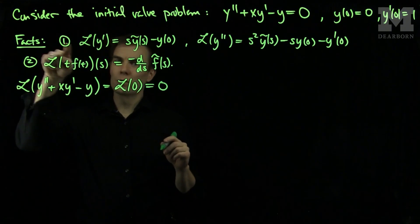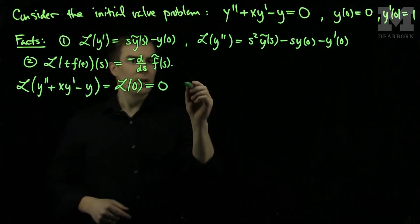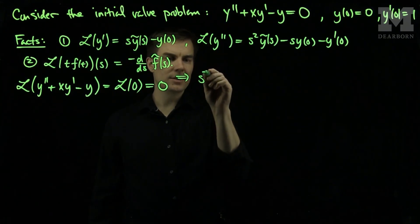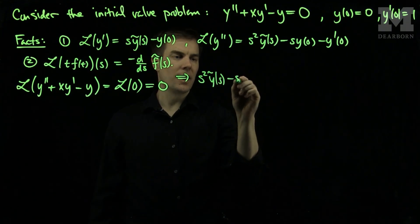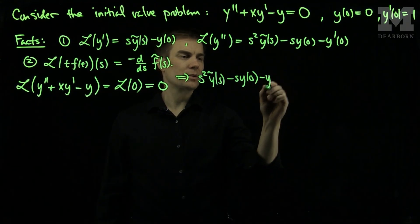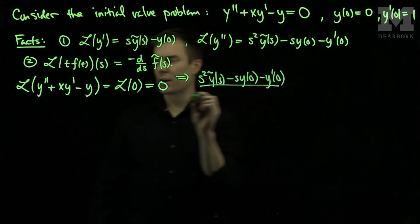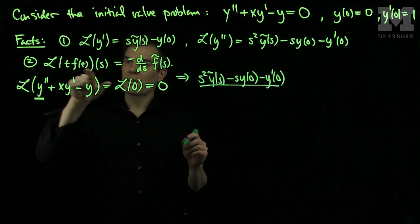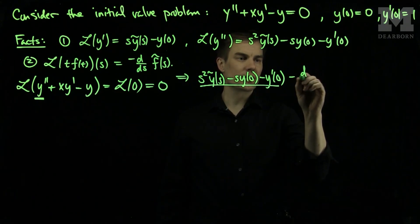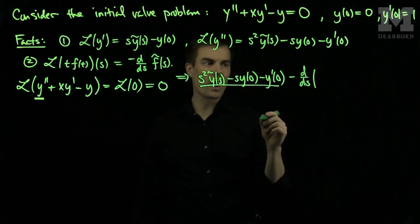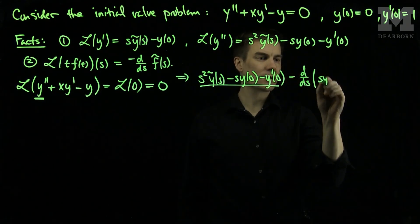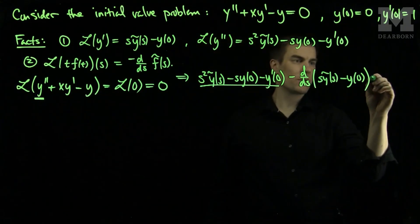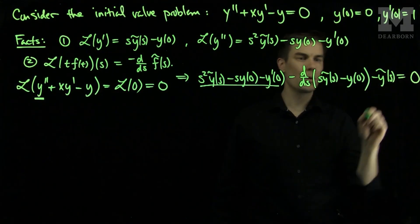I will use rules one and two to transform these terms. The Laplace Transform of y double prime will be s squared times the Laplace Transform of y minus s·y(0) minus y'(0). Then for the x·y prime term, I will need to use the second formula — this will be negative the s-derivative of the Laplace Transform of y prime, which is s times the Laplace Transform of y minus y(0). And finally, I will have the Laplace Transform of y, and this will be equal to zero.